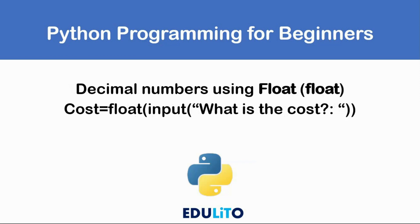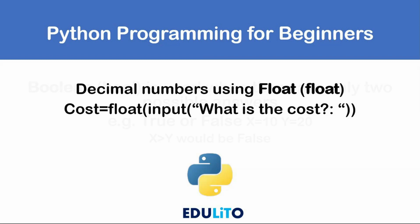With decimal numbers we use the word float, which is the same in Python itself. So in this case: cost = float(input("What is the cost?")). What's happening here is it's asking the question "what is the cost?" and the cost is a decimal number — for example, 2.99 could be the cost.